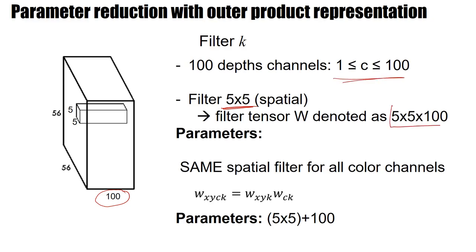And we have depth 100. So the total filter volume for one filter is 5 times 5 times 100. So let's count the parameters. 5 times 5 makes 25 times 100. That makes 2,500.